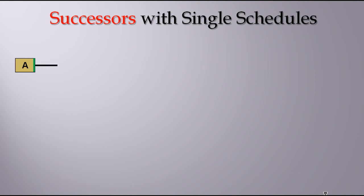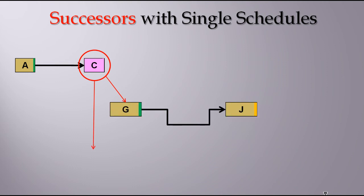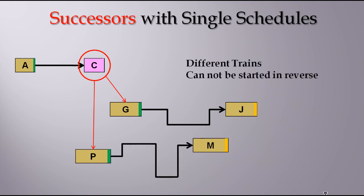Successors are slightly different. A train starting in block A would eventually arrive in block C shall we say. When it does it turns the block orange meaning it's arrived and this in turn then triggers other schedules with other trains. Ideal for a hidden siding for instance. In this instance there are different trains and they cannot be started in reverse.